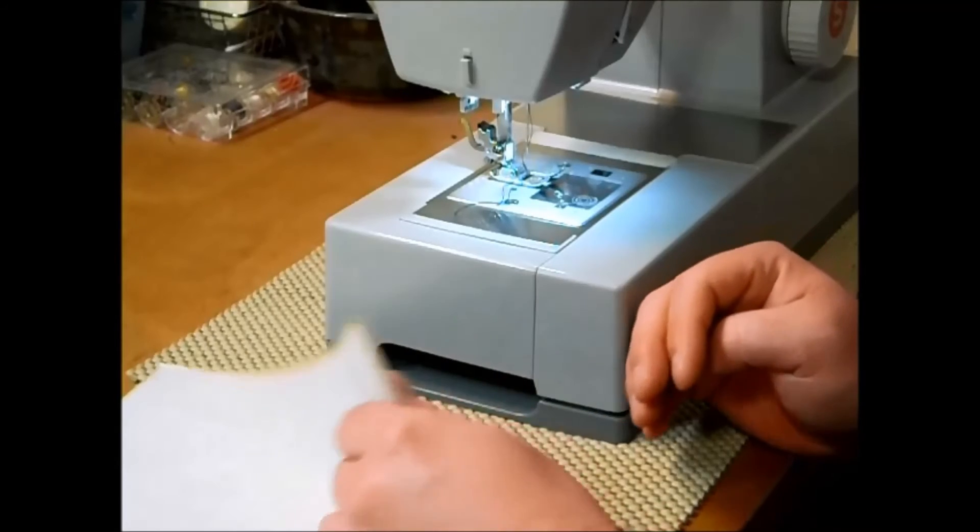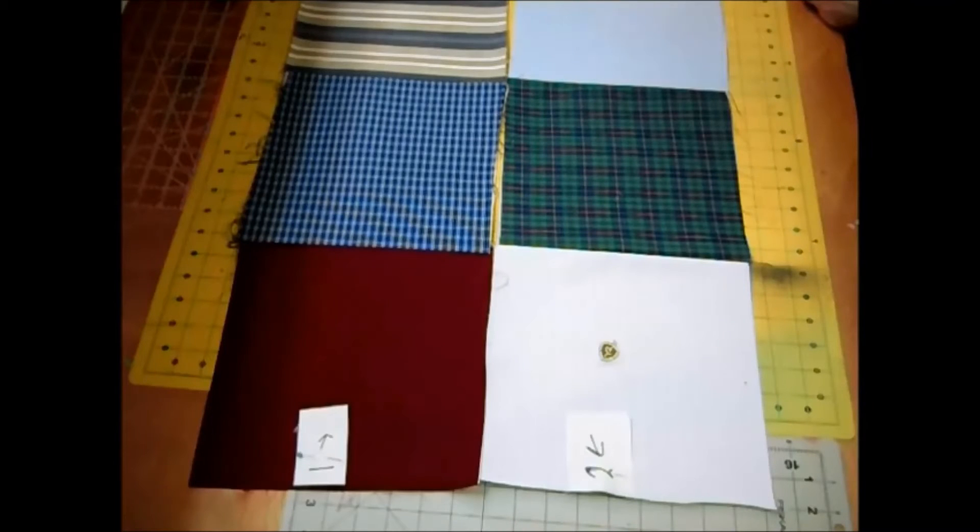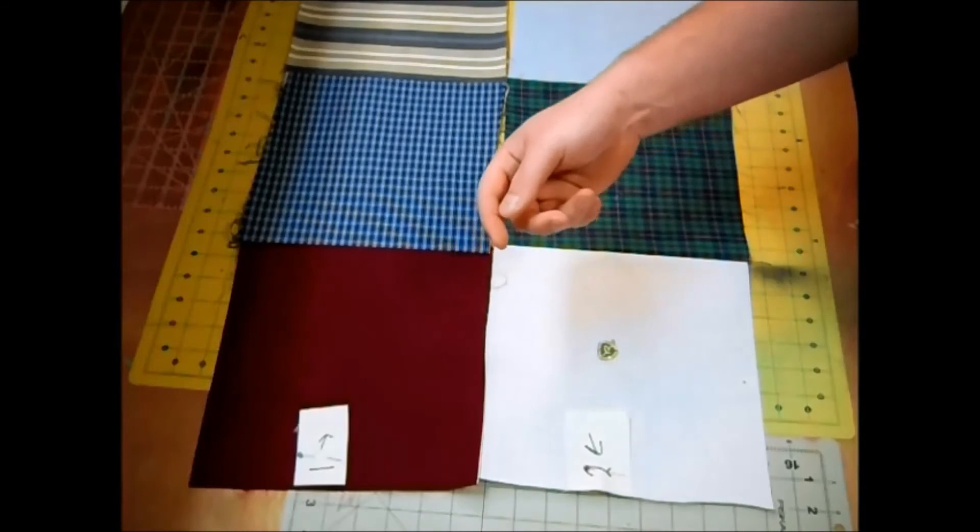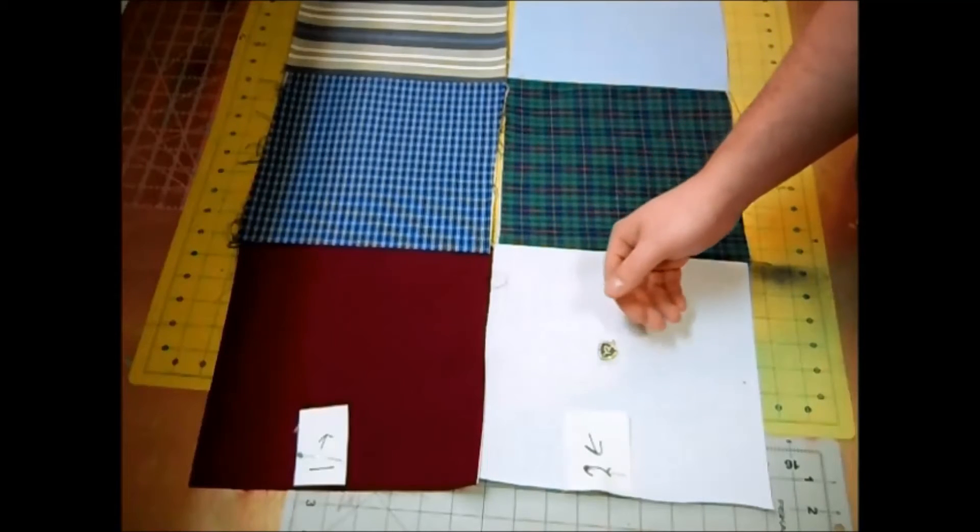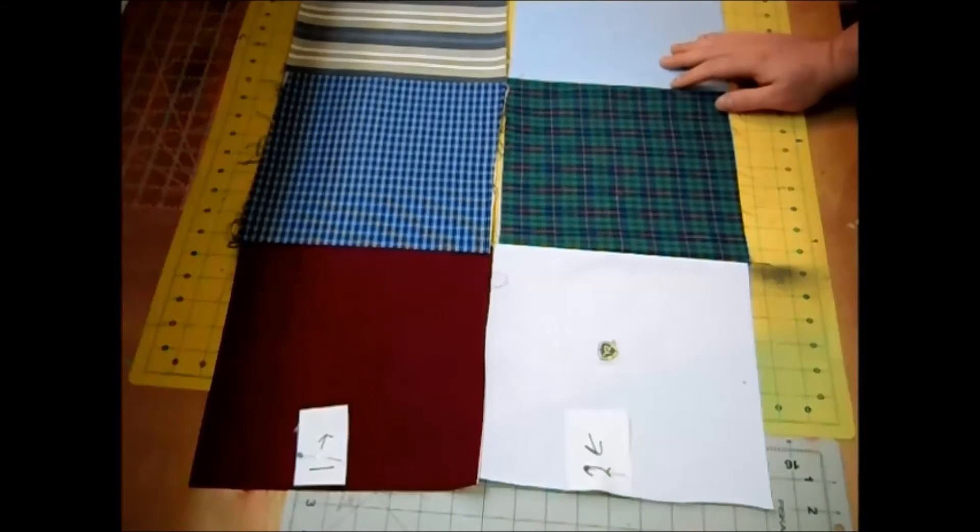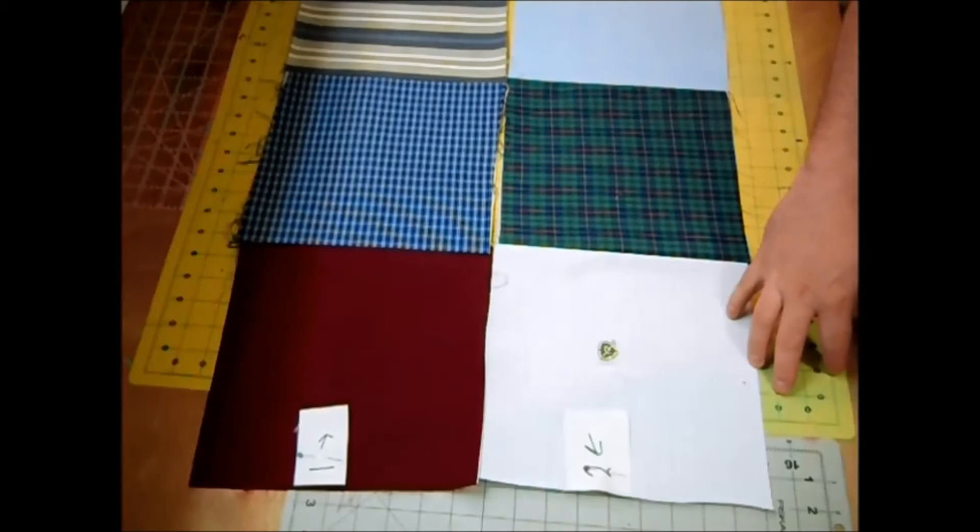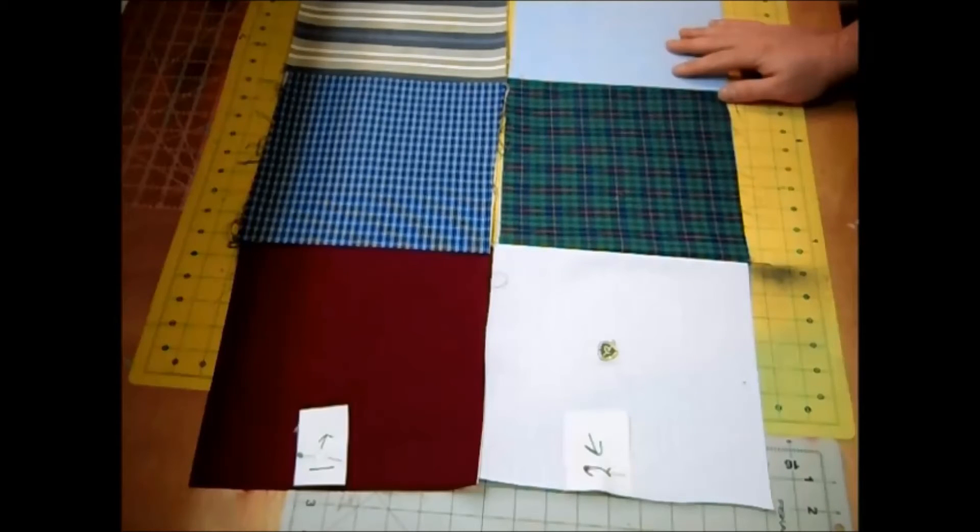I have all eight of my rows sewed together so the next thing I'm going to do is sew my rows together. I'm going to start with rows one and two, I'm going to sew those together then I'm going to sew together three and four, five and six, seven and eight. After I got those all sewed together then I'll sew together one to three, five to seven and so on and so on until I get all rows sewed together.